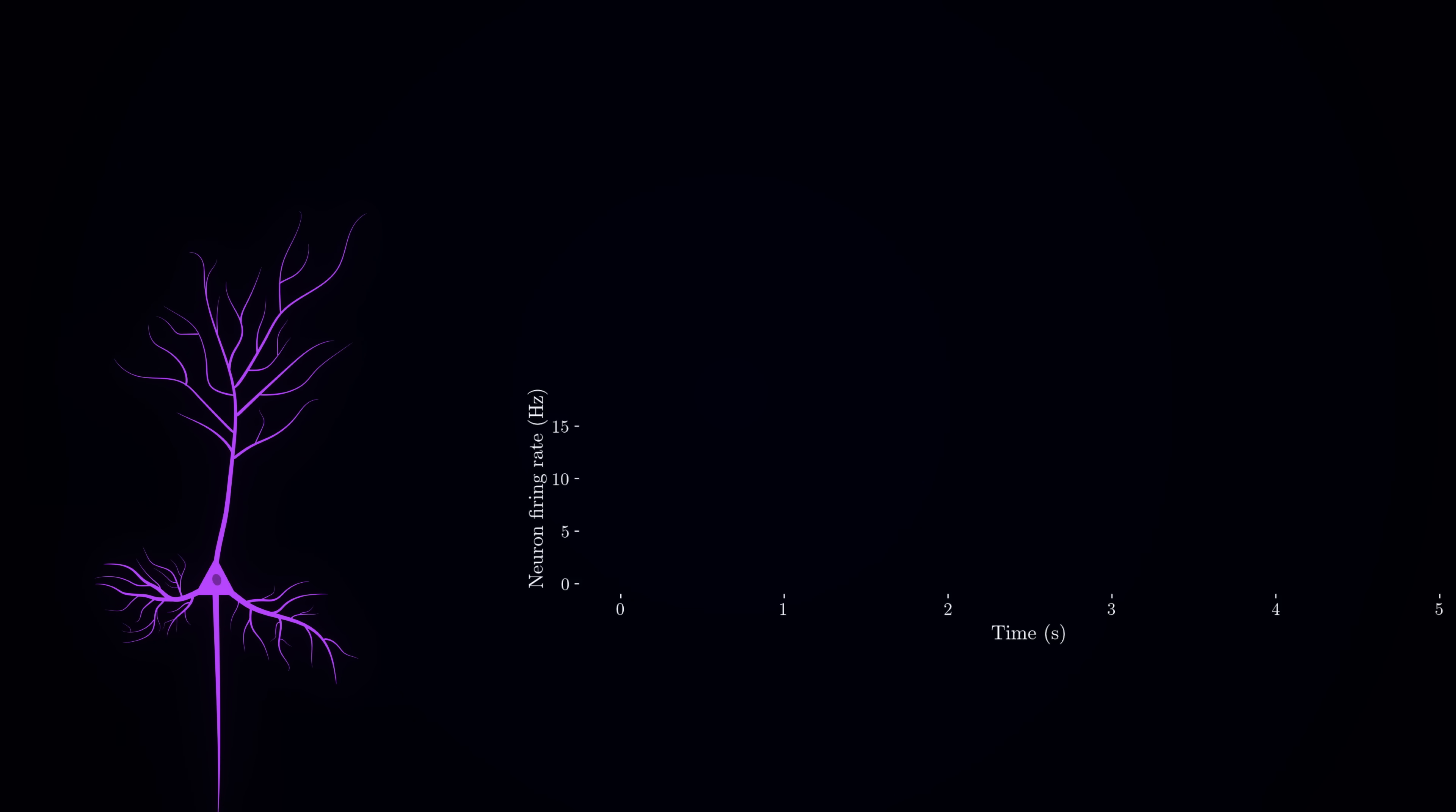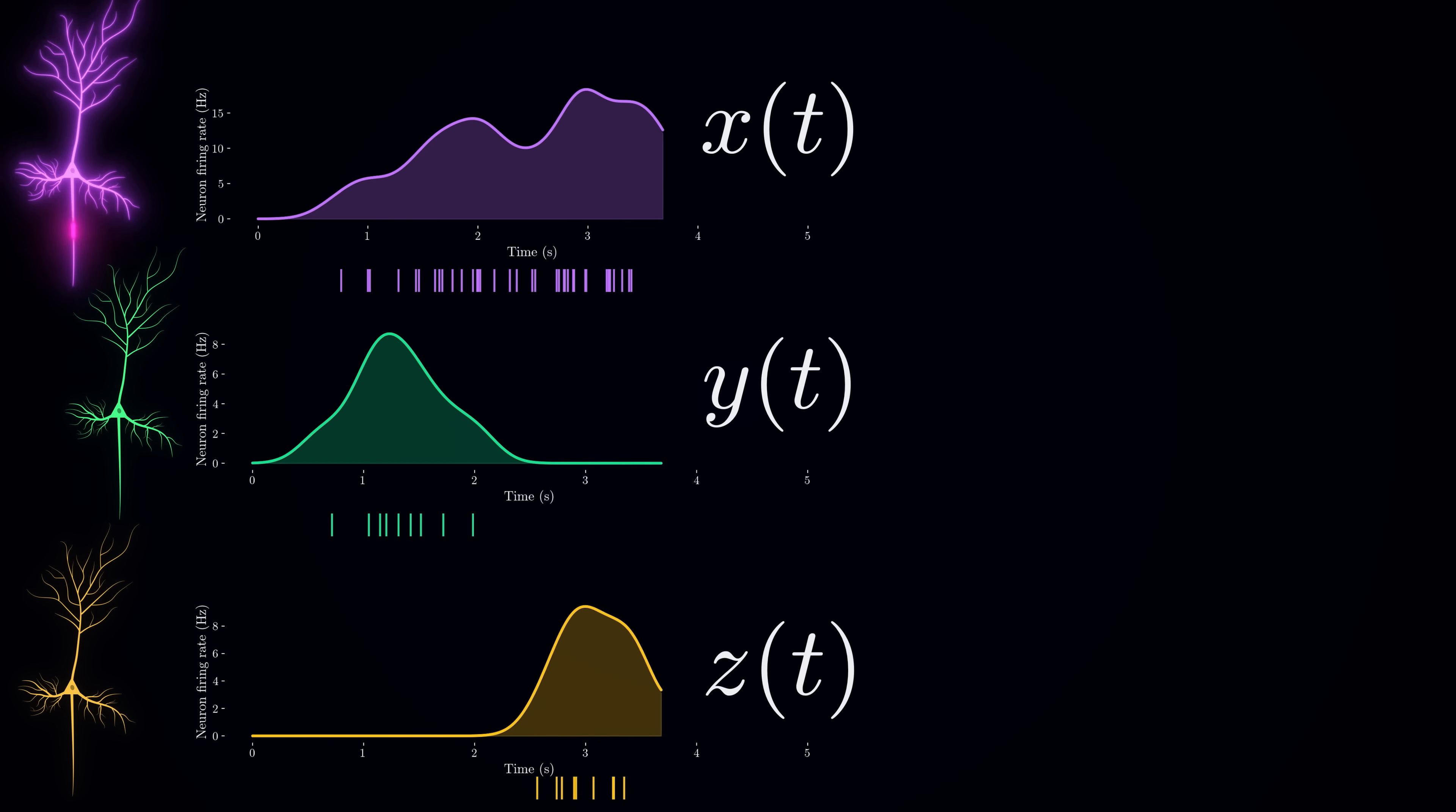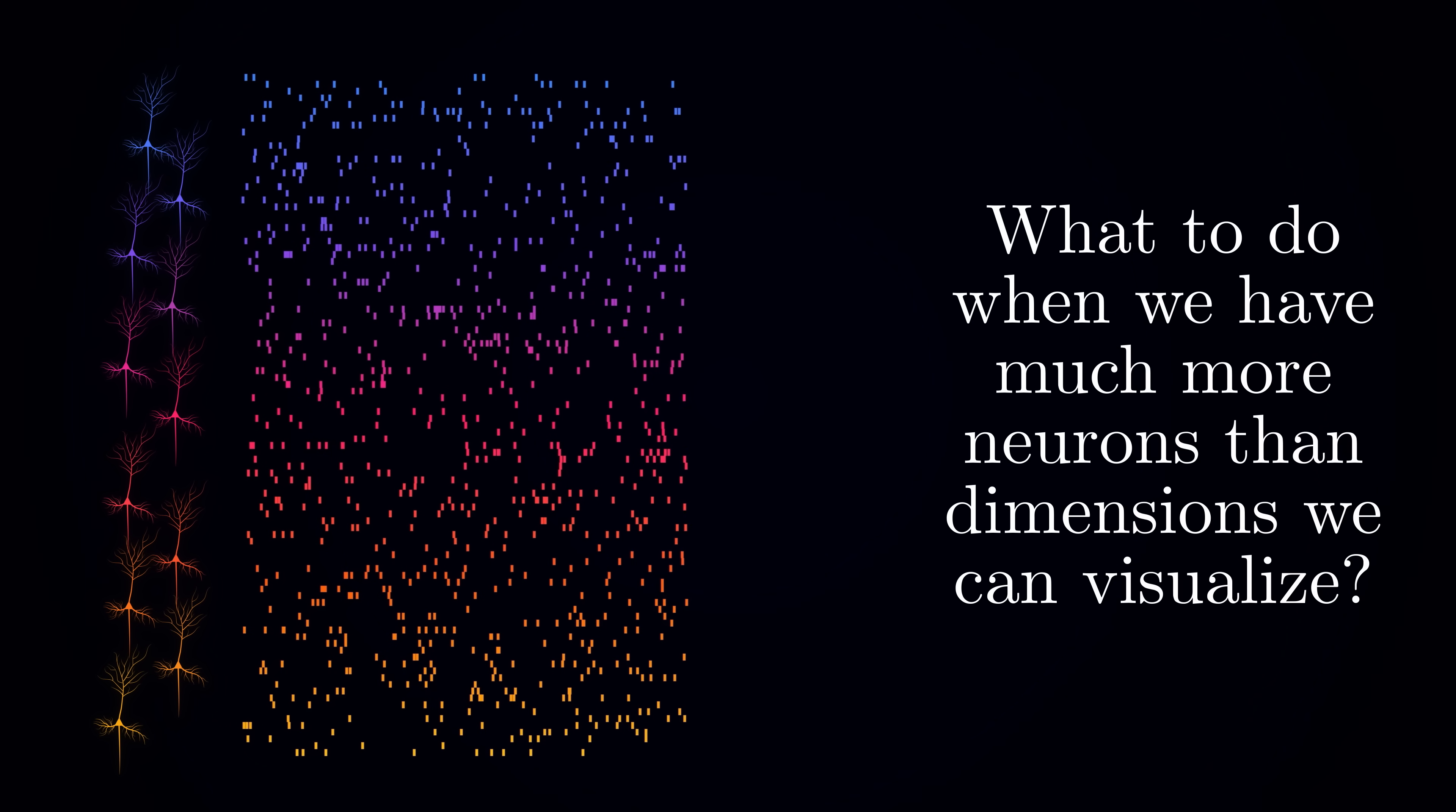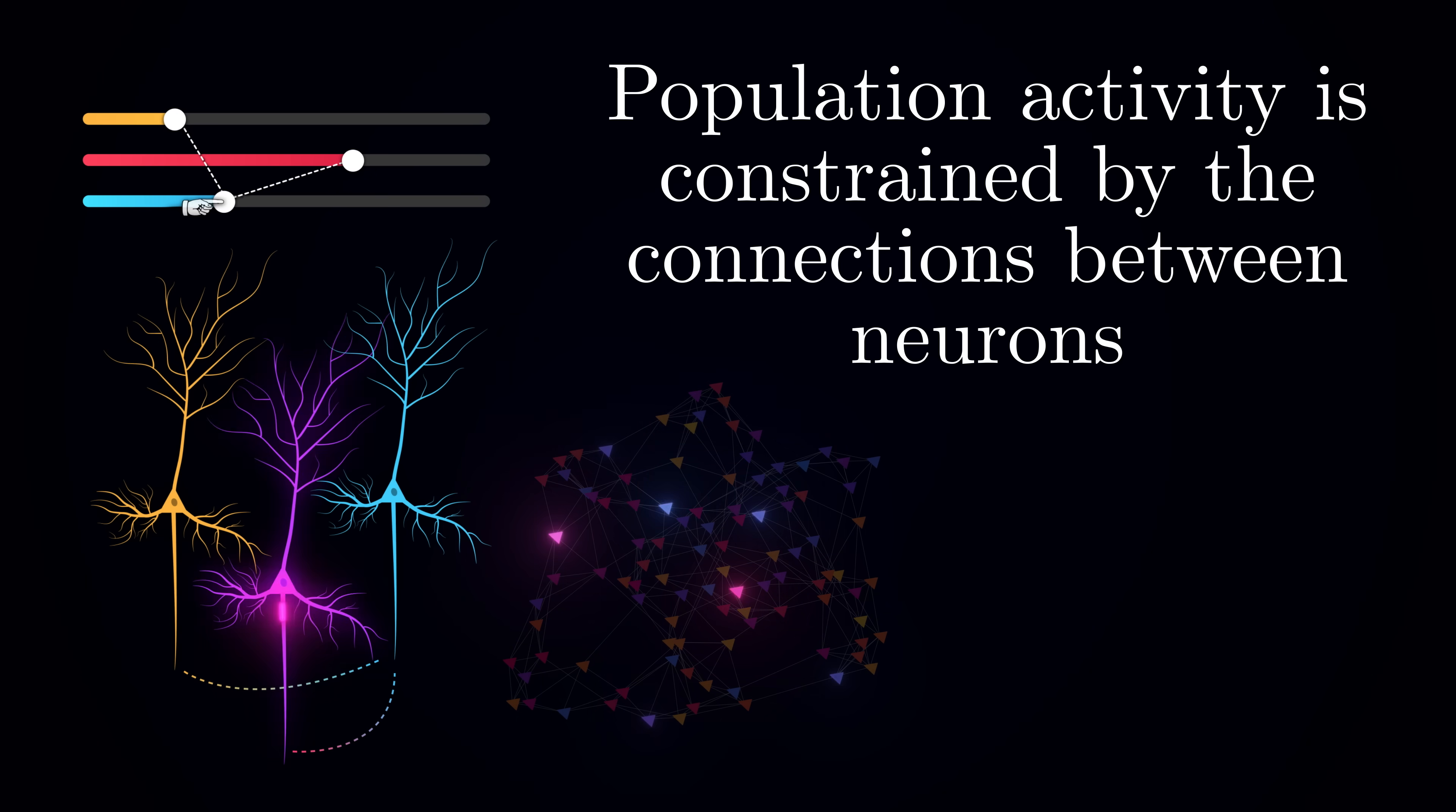A popular approach in neuroscience to make sense of such complex neural patterns is to look at the population activity and describe the collective behavior of cells in the network. Think about it this way. At any given moment, each neuron's activity level can be represented by a number – how rapidly it is firing. If you had just three numbers, you could easily plot them in three-dimensional space, with each number representing a position along X, Y, or Z axis. But when instead of just three dimensions you have 400, it is impossible to visualize. Fortunately, neurons don't act independently. Their activity is constrained by their connections and the inputs they receive, meaning that the network can only generate certain patterns.